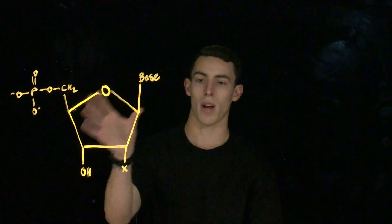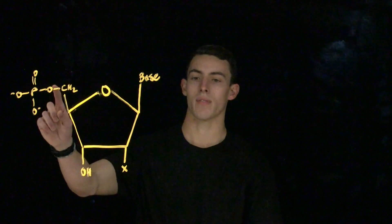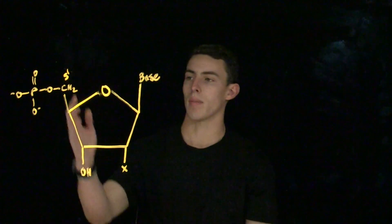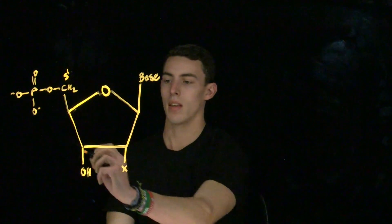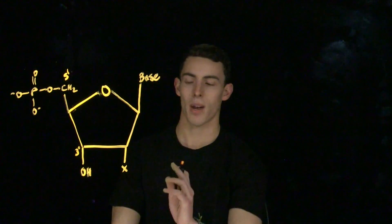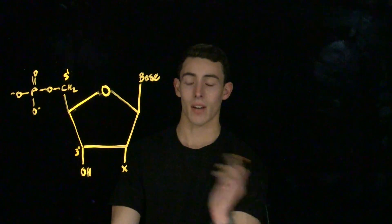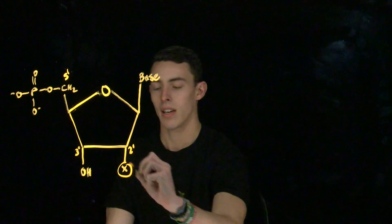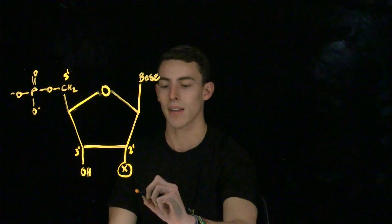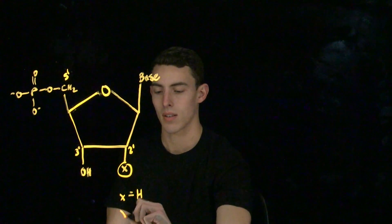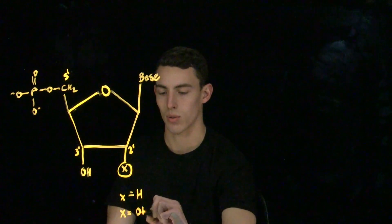The general structure of a nucleic acid is a five-membered ribosugar ring with a five-prime phosphate group — that means a phosphate group on the five-prime carbon — and a three-prime hydroxyl group. The primary difference between DNA and RNA lies in the two-prime carbon, which in the case of DNA has a hydrogen, and in RNA has a hydroxyl group.